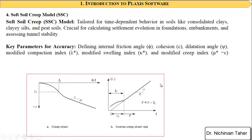Another model used for soft soil is the soft soil creep model. It is nearly similar to the soft soil model, except that it includes the modified creep index. It also estimates the settlement of a structure or soil over a very long time due to creep, represented by the parameter μ* (mu-star).